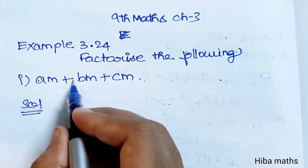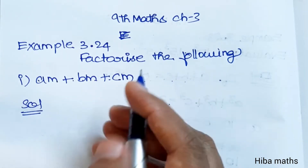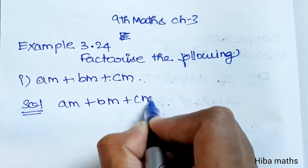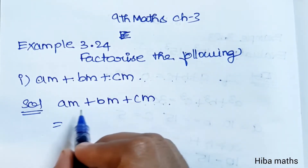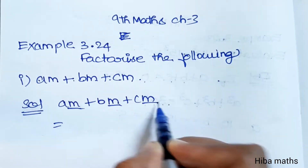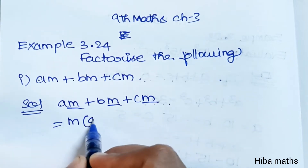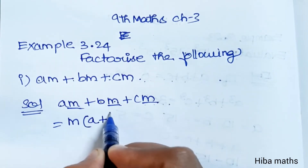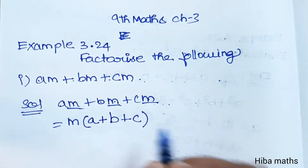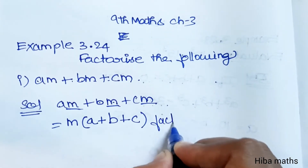First question: AM plus BM plus CM. Factorization — we look for the common term. The letter M repeats in all three terms: M, M, M. So we take M as common and write M into bracket A plus B plus C. This is the factored form.